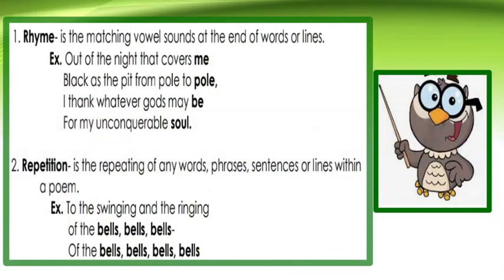The first sound device is rhyme. It is the matching vowel sounds at the end of words or lines. Example: 'Out of the night that covers me, Black as the pit from pole to pole, I thank whatever gods may be, For my unconquerable soul.'